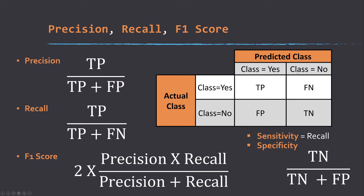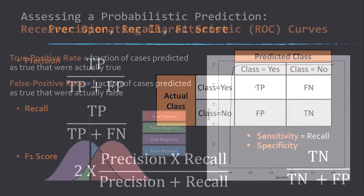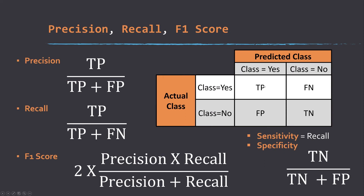From this matrix we can calculate a variety of measures. Precision is the true positive divided by the true positive plus the false positive — looking at the predicted-positive column. Recall is the true positive divided by the true positive plus the false negative — across the row. Combining those gives a harmonic mean called the F1 score, also known as the Dice coefficient. Sensitivity is the same as recall. Specificity looks at the negative cases: true negatives divided by true negatives plus false positives.